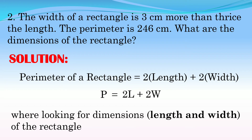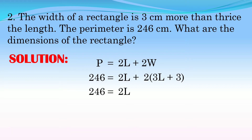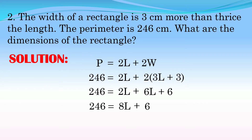We are looking for the dimensions — the length and the width. So substituting into P equals 2L plus 2W: 246 equals 2L plus 2 times (3L plus 3). Simplifying: 246 equals 2L plus 6L plus 6. Combining similar terms: 2L plus 6L equals 8L, so 246 equals 8L plus 6. Transposing 6 to the left side — adding negative 6 to both sides using the addition property of equality.